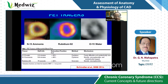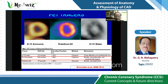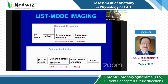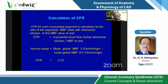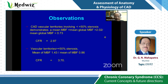Practically, nitrogen-13 ammonia and rubidium-82 are used. The acquisition protocol involves list-mode imaging: a scout scan, an attenuation scan, injection of the radionuclide, dynamic estimation for four minutes, rest emission for 15 minutes, then a stress scan with adenosine or dipyridamole — dynamic stress emission and gated stress emission scans. CFR is calculated as myocardial blood flow during stress divided by myocardial blood flow at rest. In this example, CFR is 2.97.